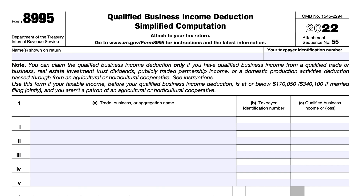One, you have Qualified Business Income, Qualified REIT Dividends, or Qualified PTP Income or Loss. Also, if your taxable income before the QBI deduction is less than or equal to $170,050 for taxpayers who are single, married filing separately, head of household, qualifying survivor spouse, or trusts and estates — or for joint filers, $340,100. And finally, if you are not a patron in a Specified Agricultural or Horticultural Cooperative.